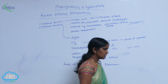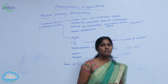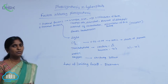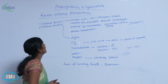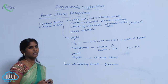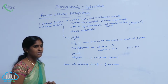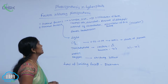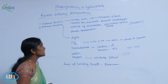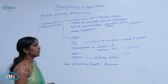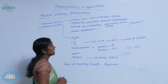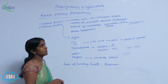Factors affecting photosynthesis. Two types of factors affect the photosynthetic yield: internal factors and external factors. Internal factors include number, size, age, and orientation of leaves.